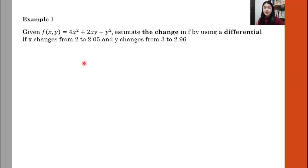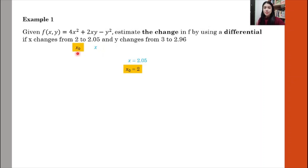Let's look at Example 1. We have a function of two variables, and we're going to estimate the change by using a differential, if x changes from 2 to 2.05 and y changes from 3 to 2.96. First of all, we let x equal to 2.05 and x₀ equal to 2. Then we let y equal to 2.96 and y₀ equal to 3.